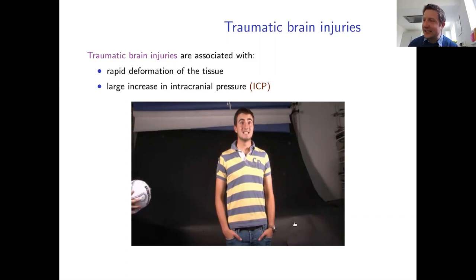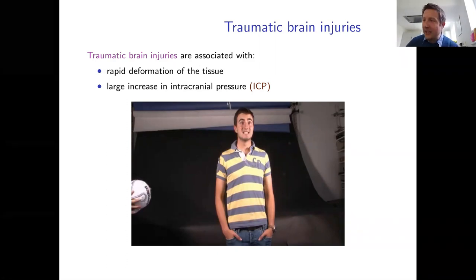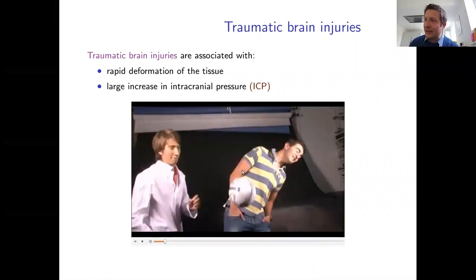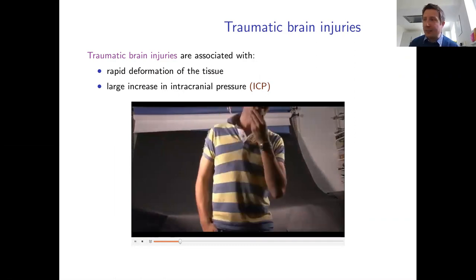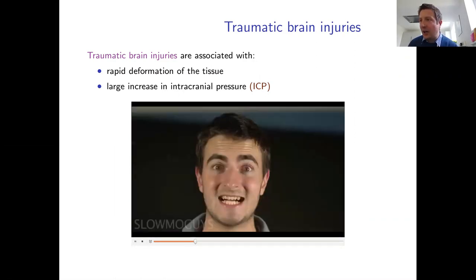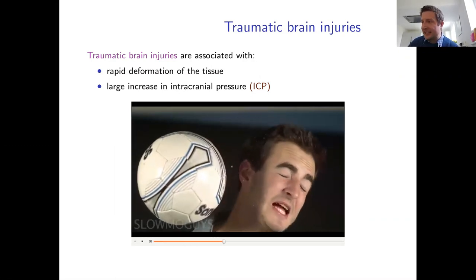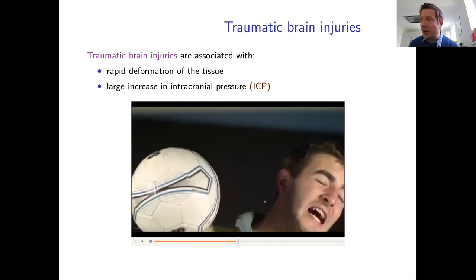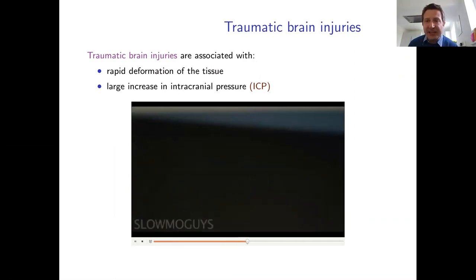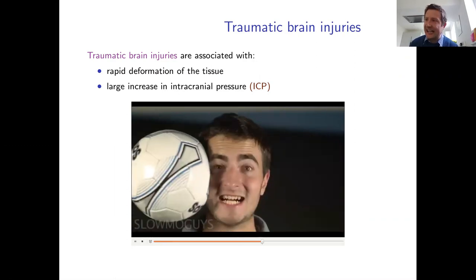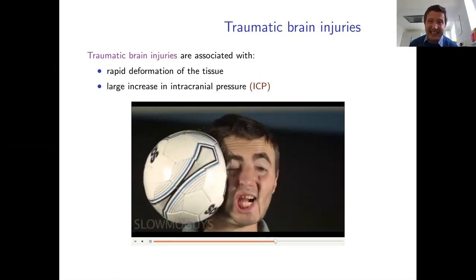To illustrate traumatic brain injury, consider a slow-motion video of a person being hit on the side of the face with a football. Even at relatively low speed and impact, one can see significant deformation and elastic waves propagating through the tissue. This rapid deformation would be associated with a large transient increase in intracranial pressure.